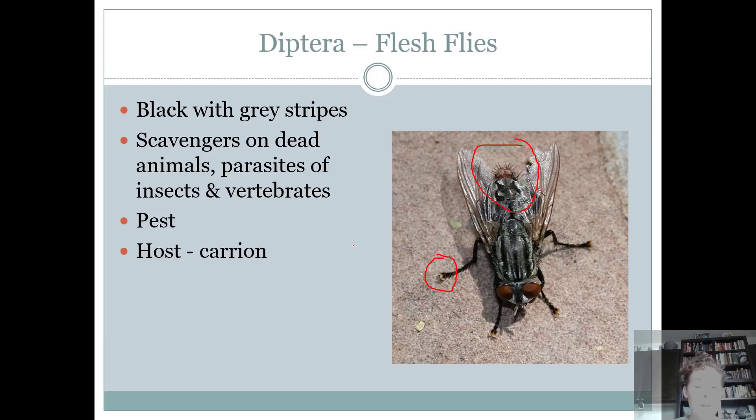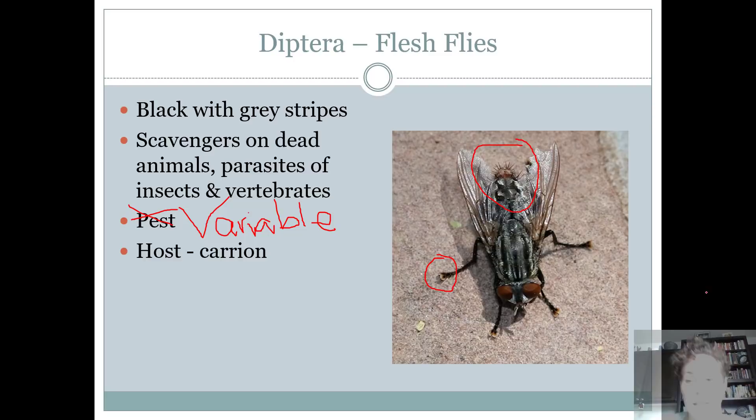Flesh flies are considered variable — they are no longer considered a pest for the contest. They are scavengers that feed on dead animals, but they can also be parasites. So they're good and they're bad. The host for these guys is also carrion.